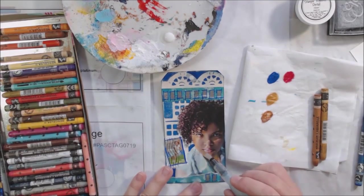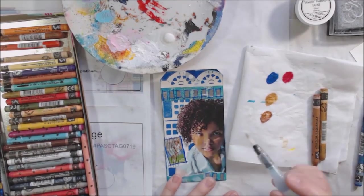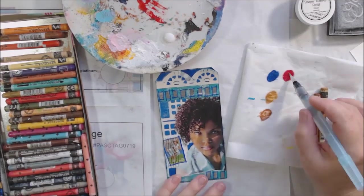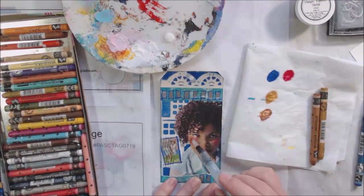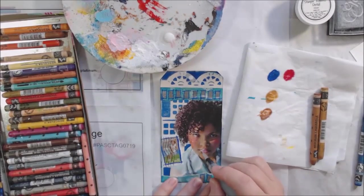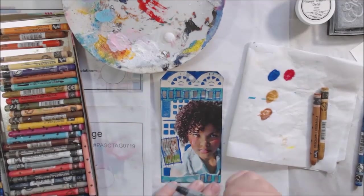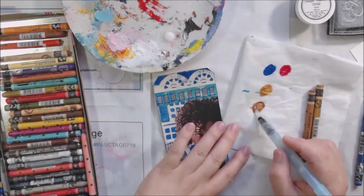This time I'm using Neocolor II water-soluble crayons, which is a watercolor product. I'm scribbling the watercolor pigment onto my scrap of deli paper and then picking it up using a combination of water from the water tank brush and some matte medium to make it a little bit more smoothly blendable and permanent.